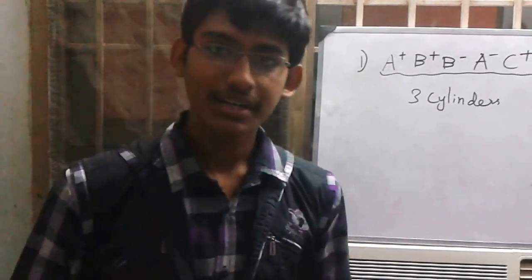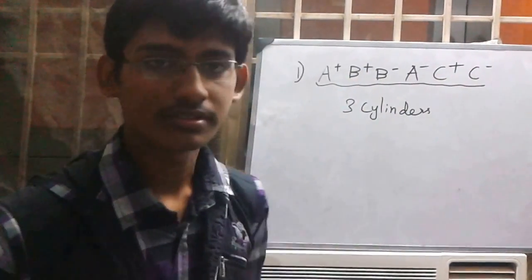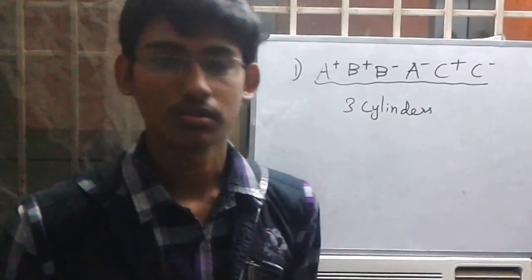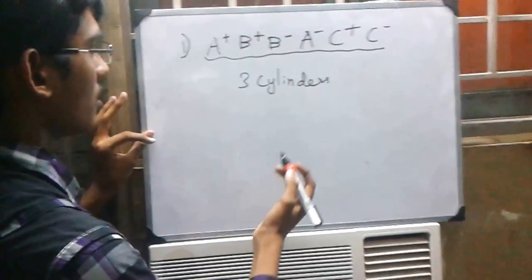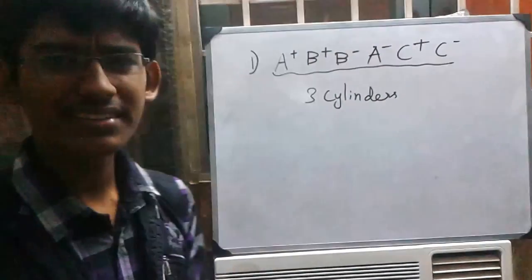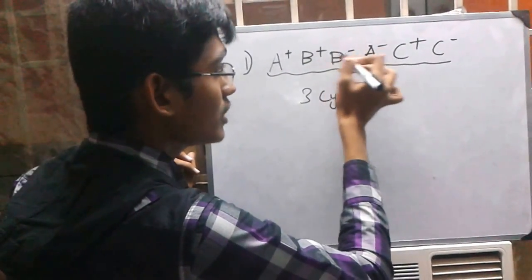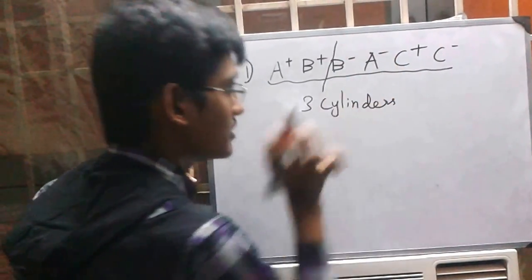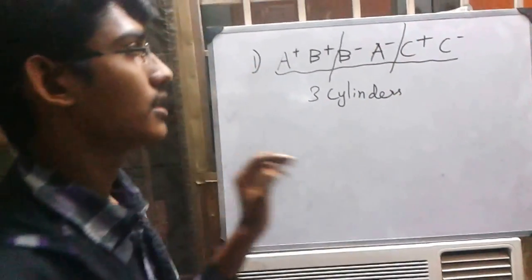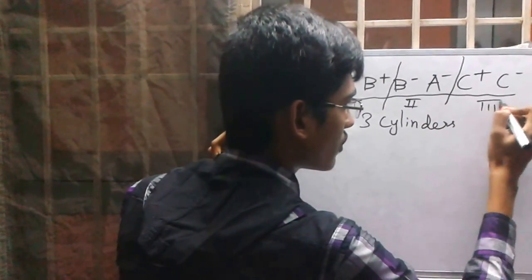Our next step will be to group this sequence into as short as possible. We have to divide this group at the place where the stroke changes. Here, plus to minus — at this place the stroke changes, so I am dividing here. For the second group, a stroke change also takes place here and another group is formed. So there are three groups formed.